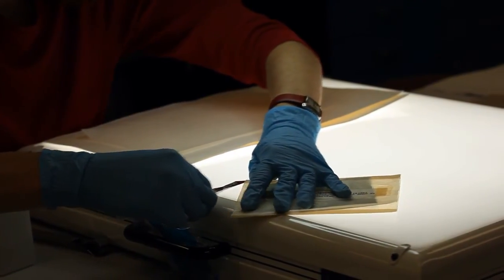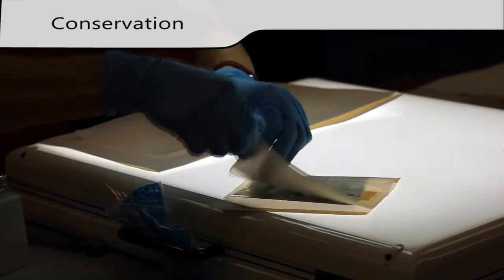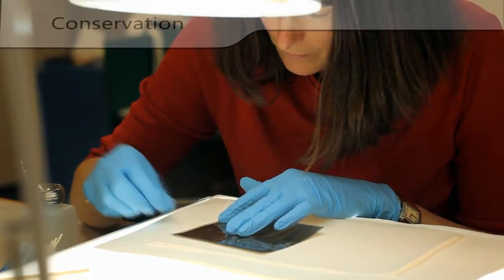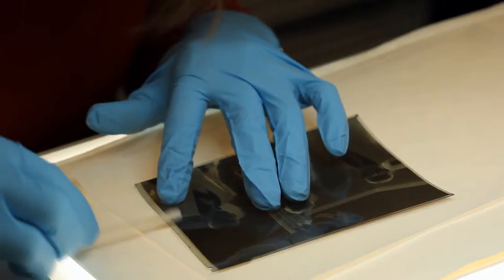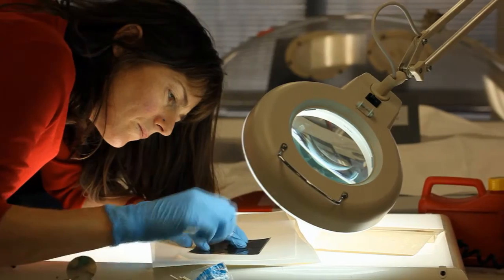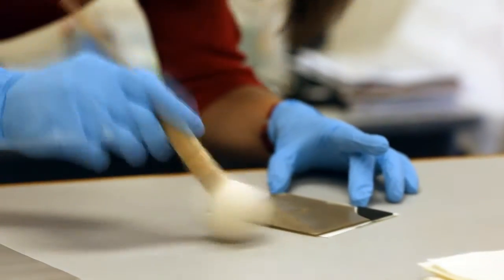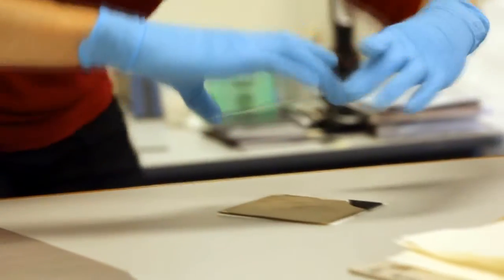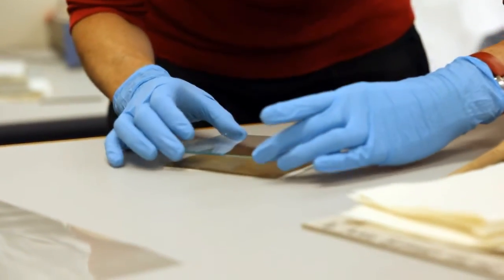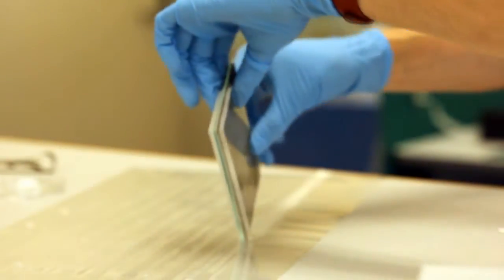Conservation is integral to the project. Old enclosures made of materials that can cause decay are replaced. Some negatives need additional cleaning so they can be digitised at their best. Cracked and broken glass negatives are repaired prior to digitisation with adhesives or new glass supports. The original plates will be digitised and seen at their best.